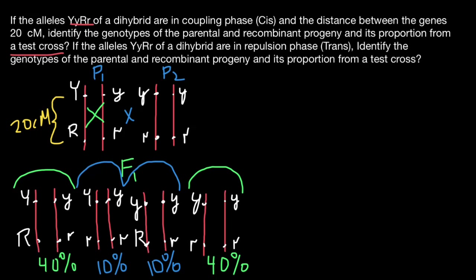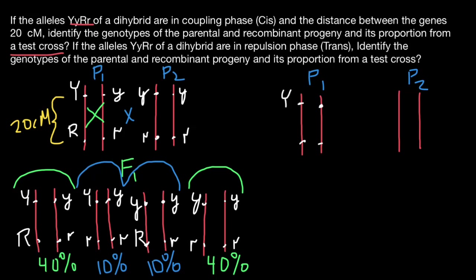Now let's answer the second question: what if the alleles of the dihybrid are in repulsion phase, or trans? Again, parent one and parent two. The two homologous chromosomes of parent one this time have capital Y and recessive y at the Y locus — same as before — but for gene R, we have recessive r on one chromosome and dominant R on the other. This is the trans position: one allele is dominant, the other recessive, and vice versa. The written genotype is still the same: capital Y, small y, capital R, small r.